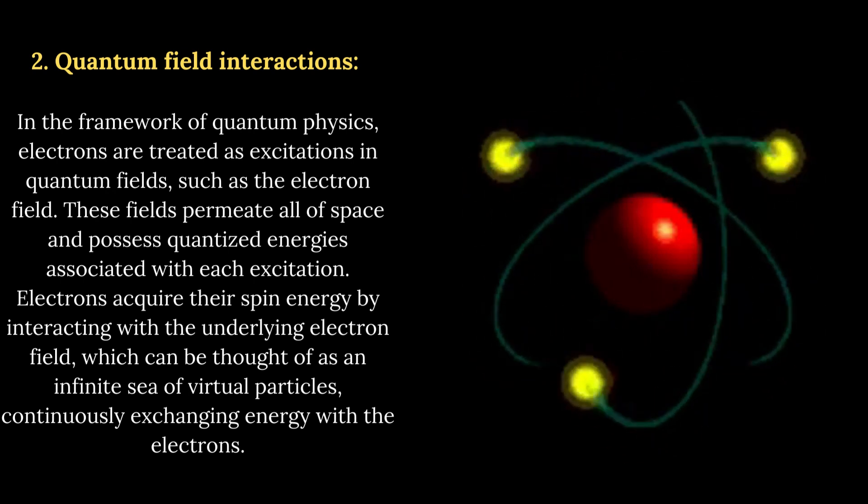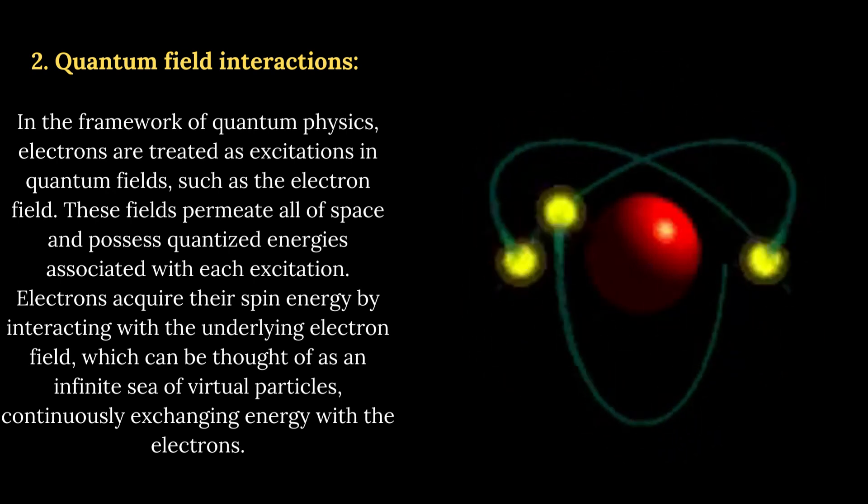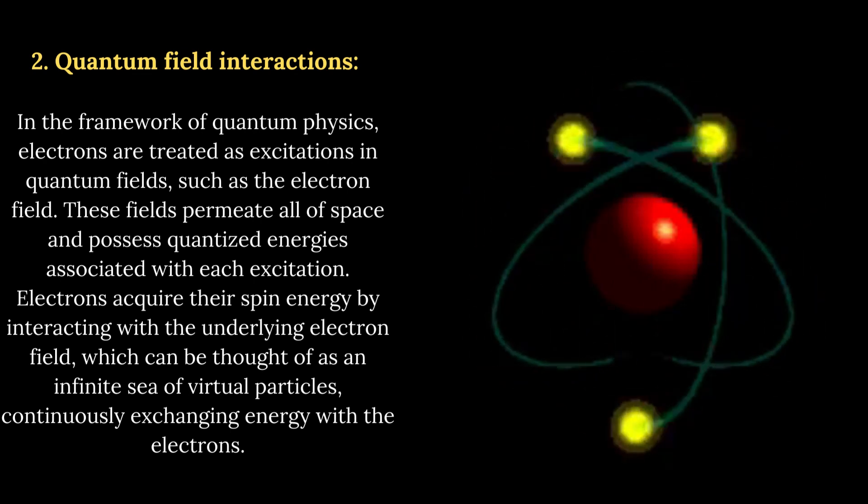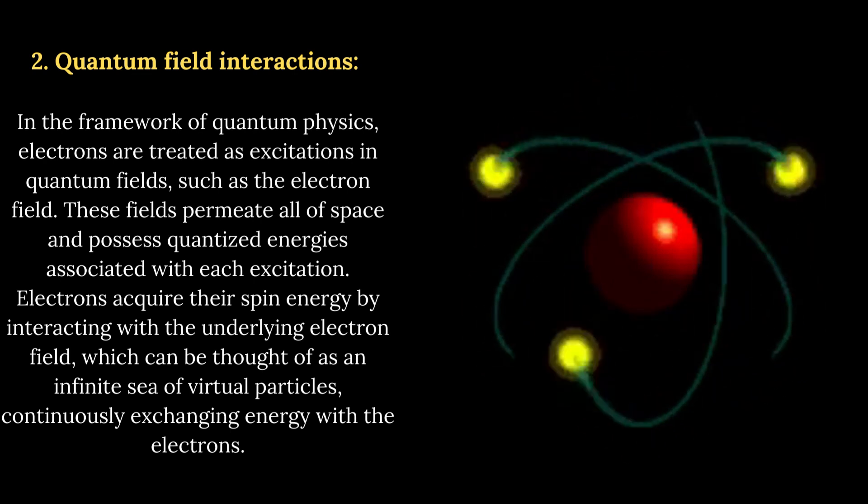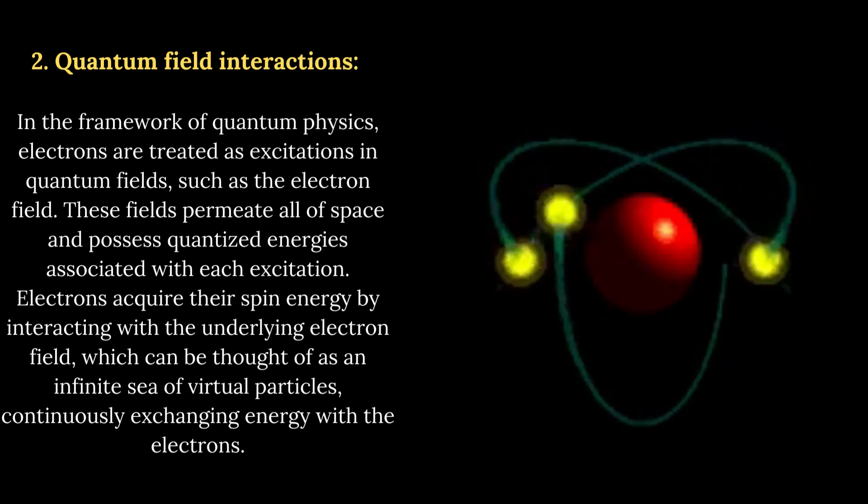Electrons acquire their spin energy by interacting with the underlying electron field, which can be thought of as an infinite sea of virtual particles, continuously exchanging energy with the electrons.